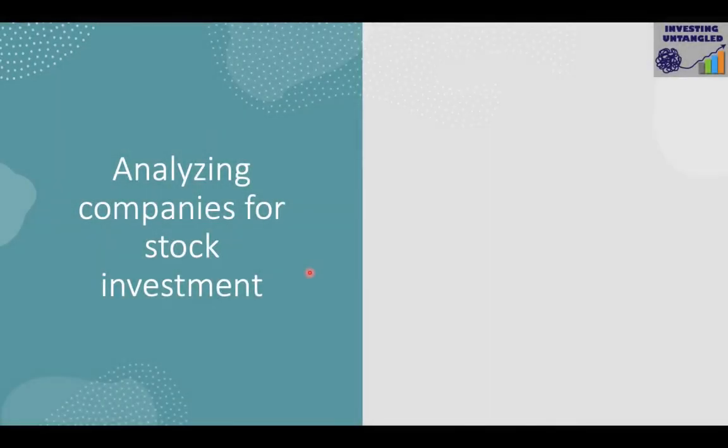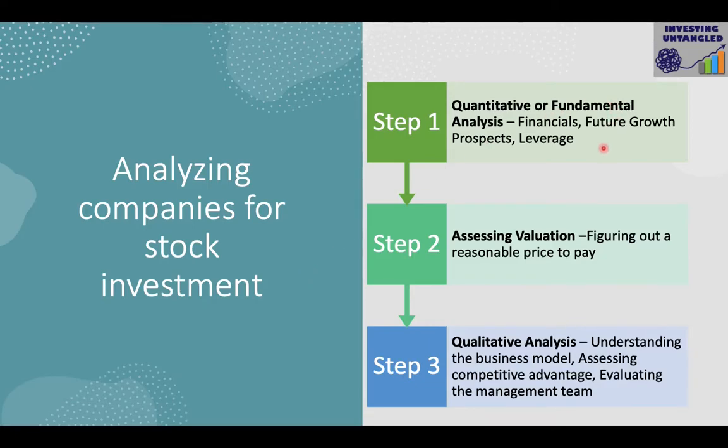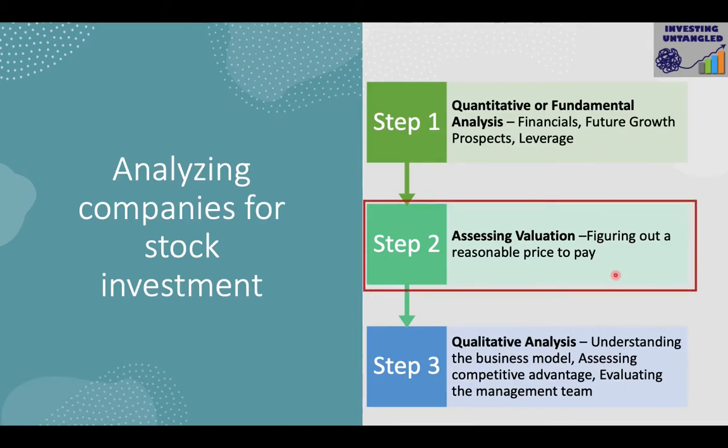Welcome to Investing Untangled. This is my second video in the series on stock analysis. I did the first video explaining quantitative analysis of stocks — I've left the link in the description below. In today's video I'll be talking about how to calculate the intrinsic value of a stock, what valuation ratios to look at, and how to make a buy price decision. I'll use a real-time example of Google. This video covers step two of my stock analysis process: assessing valuation.